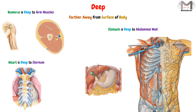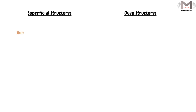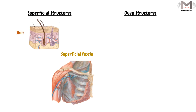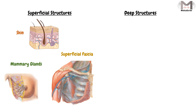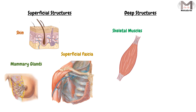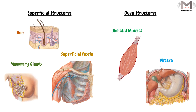That is the meaning of deep. The last point in this video: if we want to divide body structures into superficial and deep categories, the superficial structures include the skin, superficial fascia, and the mammary gland, while the deep structures include the skeletal muscles and the viscera. That was almost everything about the superficial, intermediate, and deep terms. I hope what I said makes sense. See you next video, goodbye.